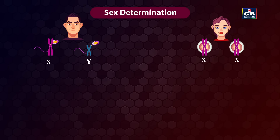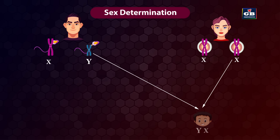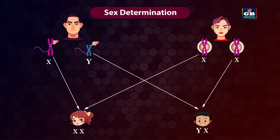During reproduction, if a sperm cell with the Y sex chromosome fuses with the egg cell, it forms a zygote with XY sex chromosomes — the baby will be a boy. If a sperm cell with the X sex chromosome fuses with the egg cell, it forms a zygote with XX sex chromosomes — the baby will be a girl. Thus, the sex of the child is determined by the chromosomes inherited from the father.